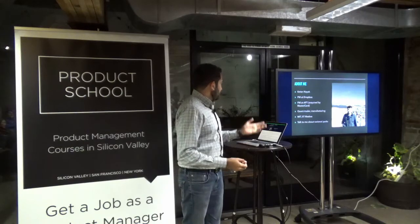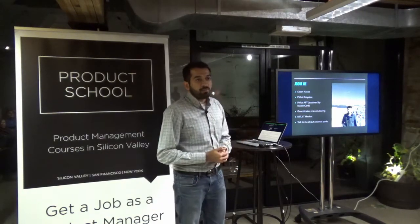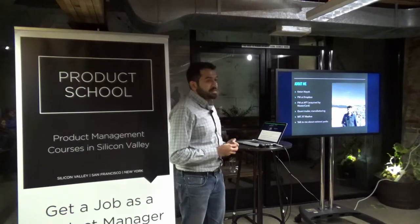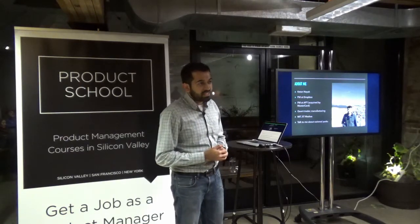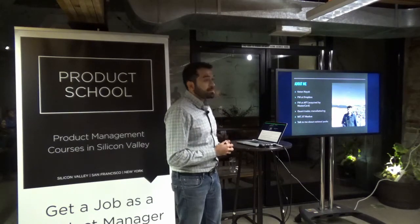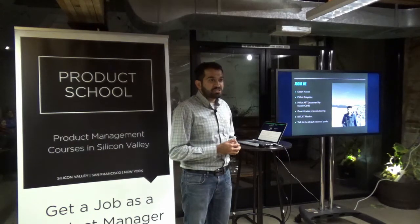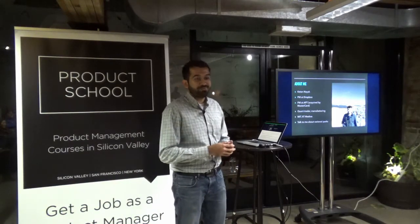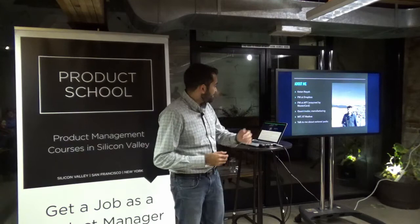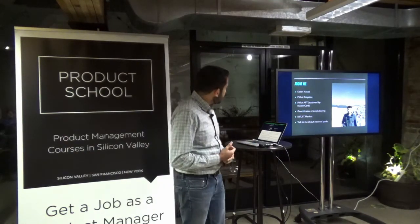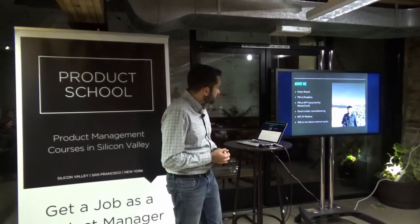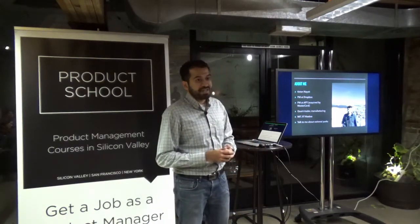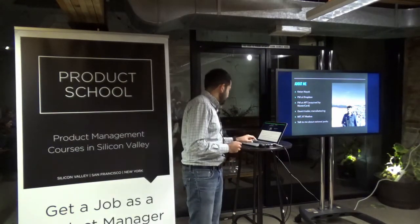A little bit more about myself: I'm Ketan, PM at Dropbox — third time saying this. I've been at Dropbox for a little over a year, where I work on the analytics and growth teams. Prior to Dropbox, I was a PM at Applied Predictive Technologies, APT out in DC, which was acquired by MasterCard — that was my first PM gig out of school. Before that, I did a whole bunch of random things from quant trading to manufacturing in a machine shop. If you're interested in how I found my roundabout way to PM, find me afterwards. I went to MIT and did my undergrad back in India. I'm a huge fan of national parks — my personal favorite is Zion, though the picture of me smiling is actually in Bryce Canyon.